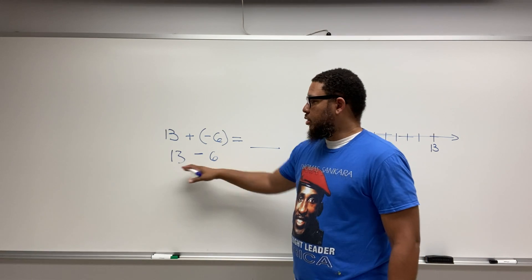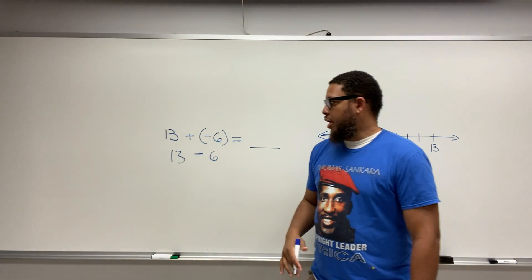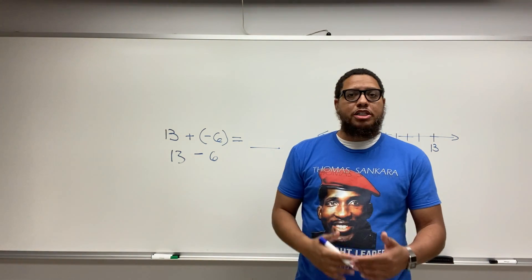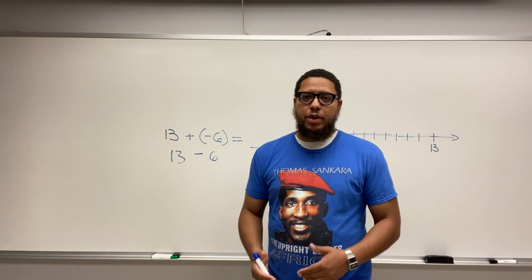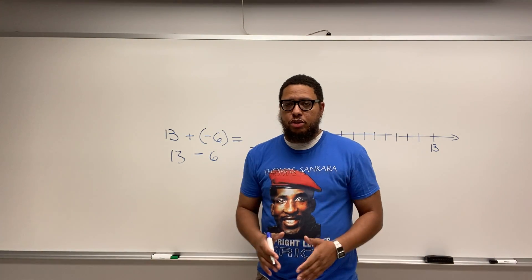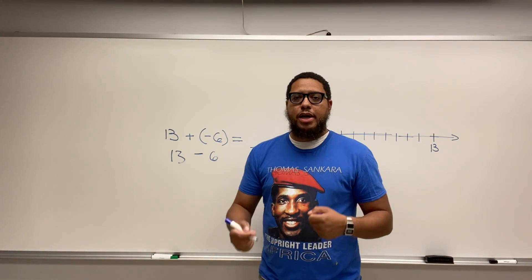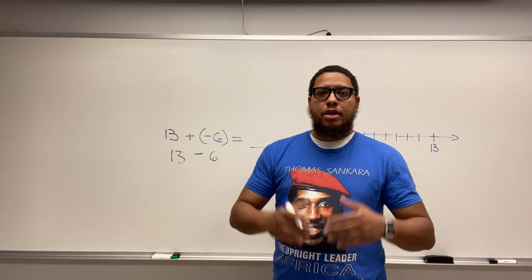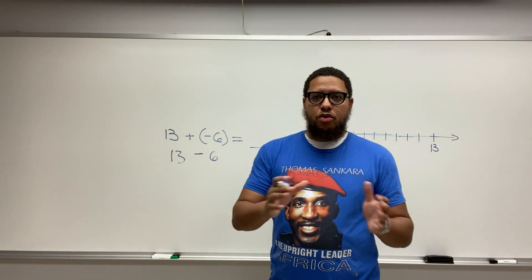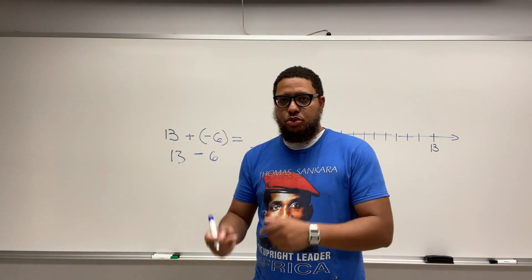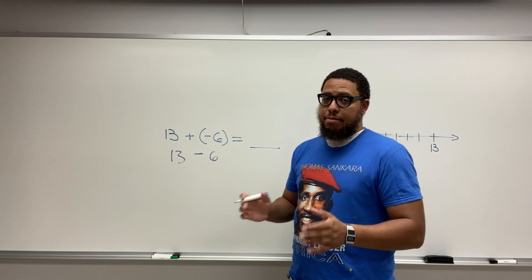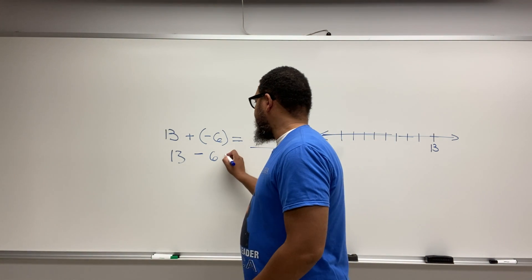That's just 13 take away 6. And if we remember our subtraction facts from way back from early on, or if you're a young person, you might be 5 or 6 or 7 years old, you're working to memorize your subtraction facts. That's good. Memorize your subtraction facts of all the single digit numbers and two digit numbers. At a minimum. So 13 take away 6 is going to be 7.